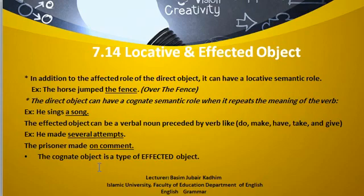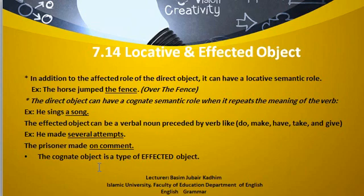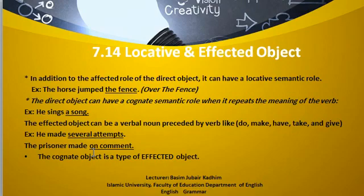This is called the effected object — not affected, but effected. For example, 'he made several attempts' — it is a verbal noun because it follows the verbs do, make, have, take. 'The prisoner made no comment' — note: this is 'no comment,' not 'on command' — that was a spelling mistake. And the cognate object is a type of affected object: 'he sings a song' is a kind of affected object.